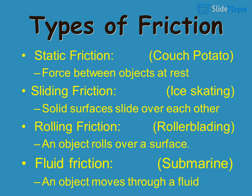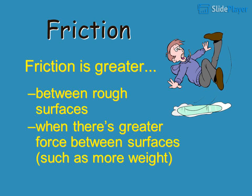Rolling friction occurs when an object rolls over a surface (example: rollerblading). Fluid friction occurs when an object moves through a fluid (example: submarine). Friction is greater between rough surfaces and when there is greater force between surfaces, such as more weight.